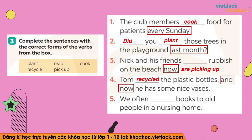Có những câu mà mình sẽ phải dựa vào câu sau hoặc là mình đọc câu đó nên mình dựa vào ngữ cảnh — các bạn nhớ không phải câu nào cũng có dấu hiệu nhận biết thì rất là rõ ràng. Câu số 5: books thì chính là read (đọc sách). Và ở đây mình có dấu hiệu nhận biết là often (thường xuyên) — thì hiện tại đơn: We often read books to old people in nursing homes — chúng tôi thường đọc sách cho người già trong viện dưỡng lão.